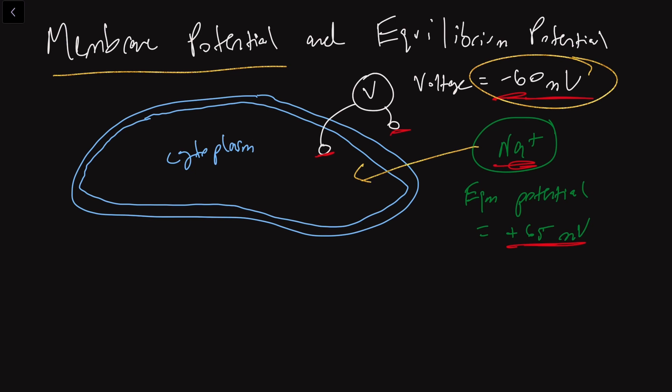And sodium will want to continue to do that until there are enough sodiums in here that the equilibrium potential will be equivalent to the voltage inside of that cell. So if you had a voltmeter and you had a cell that was already at plus 65 millivolts, then sodium based on its chemical charge isn't going to want to enter that cell. Even if it had a concentration gradient, it wouldn't care because the sodium is going to say it's already at the equilibrium potential that I have, so I don't really care anymore.